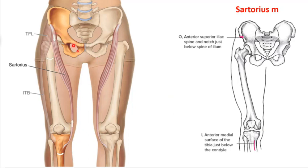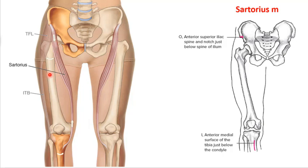The sartorius attaches to the ASIS, just above the rectus femoris, and is labeled the longest muscle of the body because it attaches all the way up at the top of the hip and comes all the way down to attach below the knee at the pes anserine. It's considered the tailor's muscle because it performs hip flexion, hip external rotation, and knee flexion — all three actions that occur when you cross your legs or put your ankle on your opposite knee in a figure-four position.